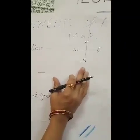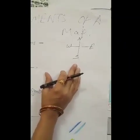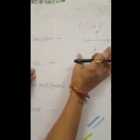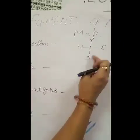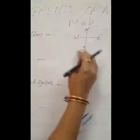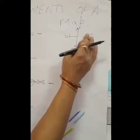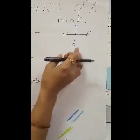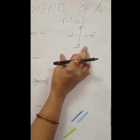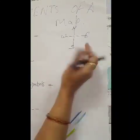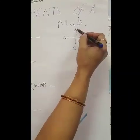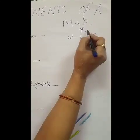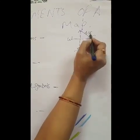These four directions are called cardinal directions. Along with the cardinal directions, we also have intermediate directions. When we go from north towards east, that direction is called north-east.